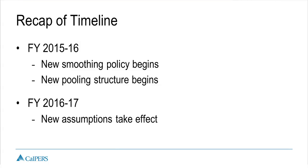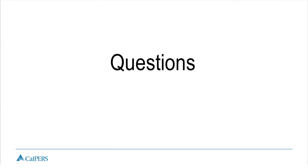To recap: in fiscal year 2015-16 — the valuation coming out in September — your rate will incorporate the new smoothing policy and, if you are a pooled plan, the new pooling structure. Then in fiscal year 2016-17, set by the 2014 valuation, you'll see the new assumptions impacting your rate for the first time. In the 2013 valuation you receive this year, your projections will also give you a heads-up on what these assumptions are expected to do to your rate. With that, we'll open it up for questions.